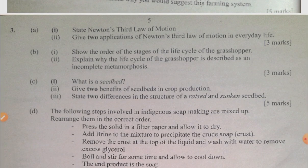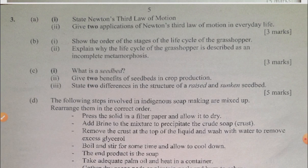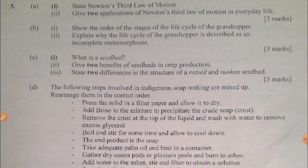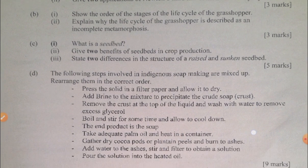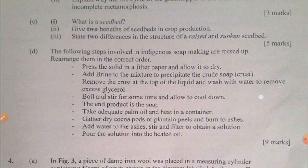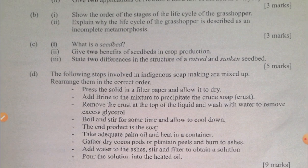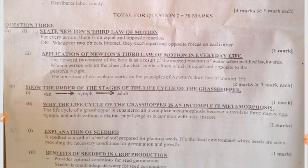Question 2d covers the mixed cropping farming system and its advantages. Question 3a has to do with Newton's third law of motion. Question 3b involves the grasshopper — explain why the life cycle of the grasshopper is described as incomplete metamorphosis. Question 3c has to do with seedbeds — raised bed and sunken bed. Question 3d involves rearranging steps in indigenous soap making.